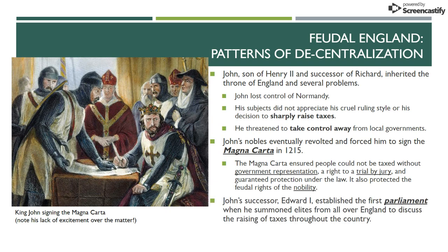A later successor of John, Edward I, is going to establish the first parliament. This is the first form of representative government in Europe after the collapse of the Roman Empire. It's eventually going to take over as the leader of England, but that's not for another several centuries. At this time, its main role is for nobles — since they're the only ones with representation — to get together to advise the king on taxation. We're going to talk later about the 1400 parliament, but for now we're going to take a break and I'll pick up again with feudalism in France. Thanks for listening.